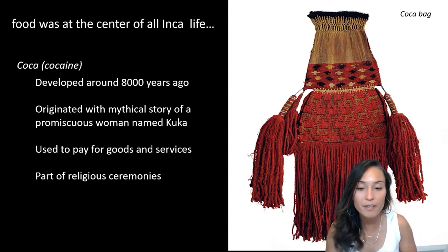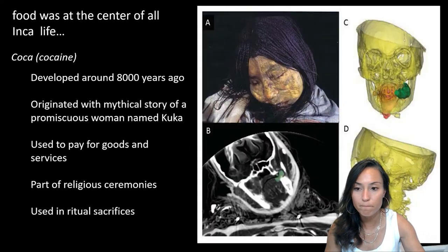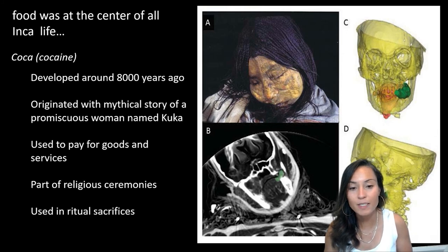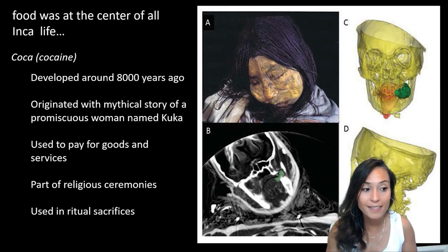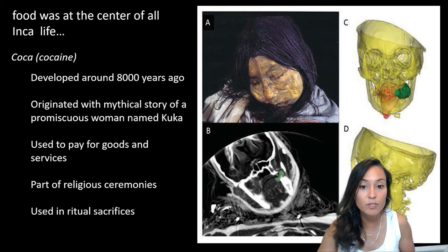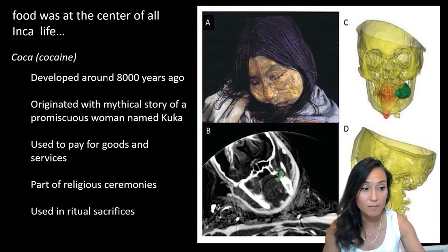Coca was considered sacred to the Inca and was used in all sorts of religious ceremonies, very similar to chicha. Spanish priests observed that the Inca would burn coca leaves and blow the fumes towards the sun to foster healing the sick. Coca was also buried with the dead and included among their grave goods to accompany them into the afterlife. Coca also played a role in ritual sacrifice: three mummies of sacrificial victims discovered in 1999 within Inca sites revealed high consumption of coca in the months preceding their deaths. Consuming coca leaves was believed to induce a kind of holy existential trance, and this altered state disoriented sacrificial victims, making them easier to subdue.